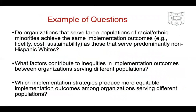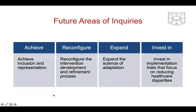Some research questions could be: Do organizations serving large populations of racial and ethnic minorities achieve the same implementation outcomes — fidelity, cost, sustainability — as those serving predominantly non-Hispanic whites? What factors contribute to inequities in implementation outcomes between organizations serving different populations? Which implementation strategies produce more equitable outcomes? There are areas of study around reach and inclusion, reconfiguring interventions to be manageable and adaptive, expanding the science of adaptation, and investing in implementation trials focused on reducing healthcare disparities.